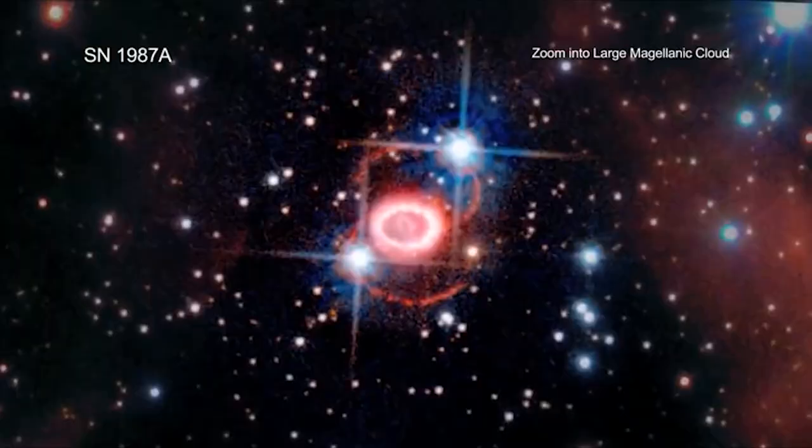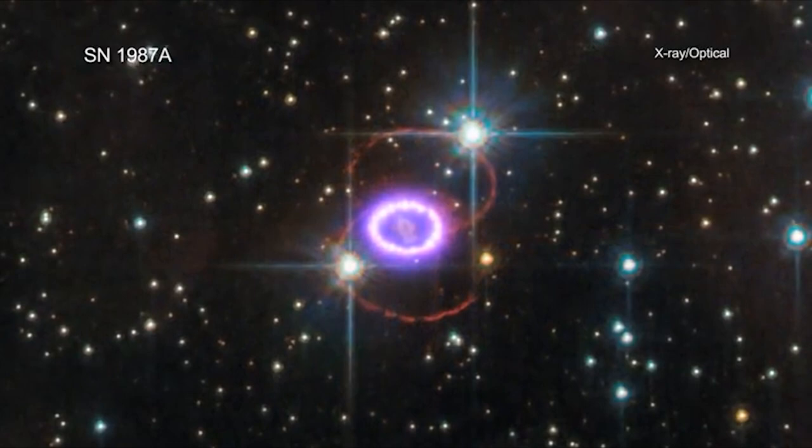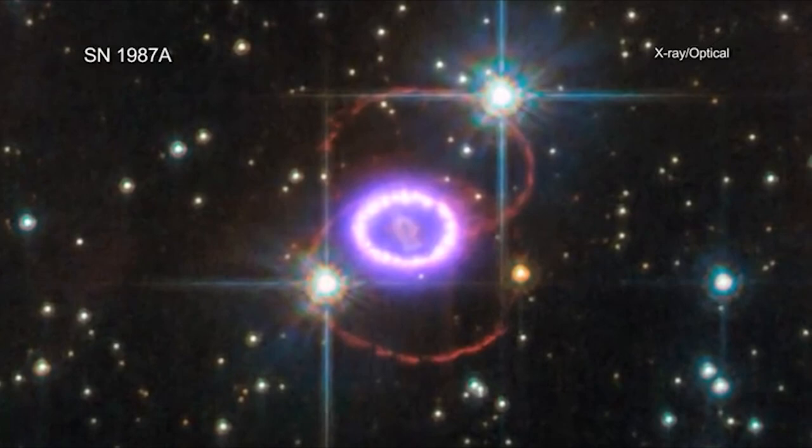Intriguing new evidence for the existence of the neutron star at the center of SN 1987A is now presented by data from NASA's Chandra X-ray Observatory, previously unpublished data from NASA's Nuclear Spectroscopic Telescope Array, also known as NuSTAR, in addition to data from the Atacama Large Millimeter Array, also known as ALMA, reported last year.